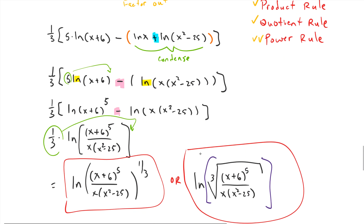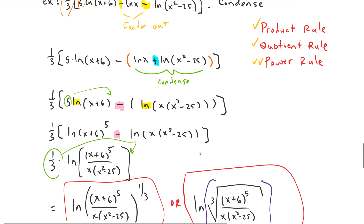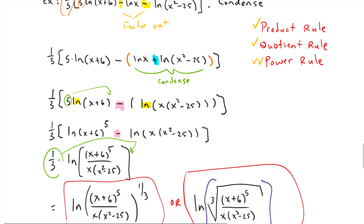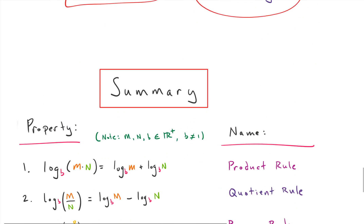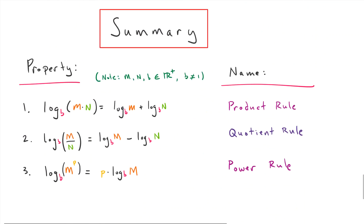A note: the quotient rule often takes precedence over the product rule, and the product rule takes precedence over the power rule — helpful to keep in mind as you work through problems. Let's look at the summary: we dealt with the product rule, the quotient rule, and the power rule. That's it. Thanks for watching.